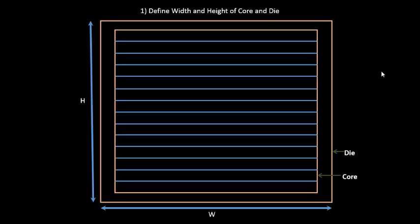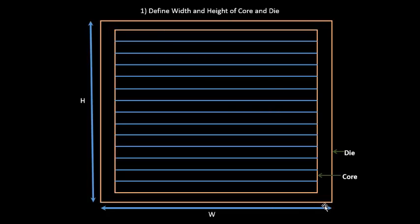The first step of floor planning is to define the width and height of the core and die. In a chip, if you have a square-shaped chip, the core is the area where the netlist sits — the core logic and all the functionality will be placed here. Surrounding the core, after leaving some space, is the die. This step defines the width and height of core and die, which will be covered in detail in following sections.